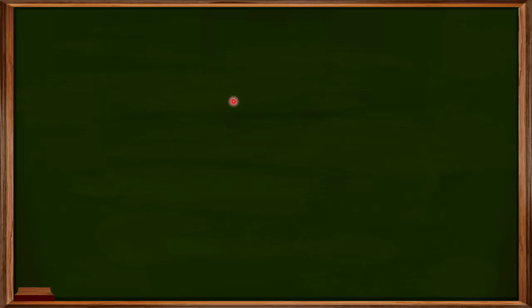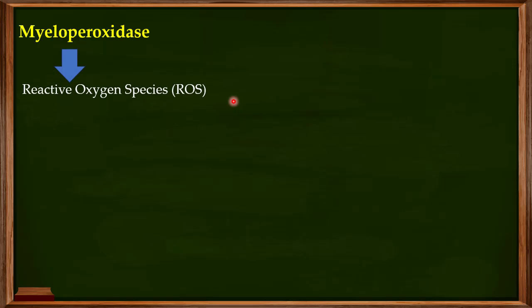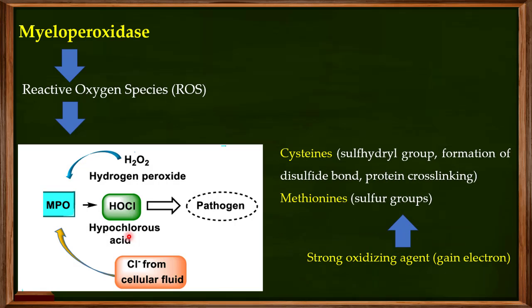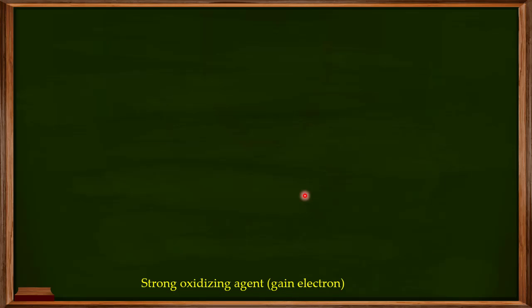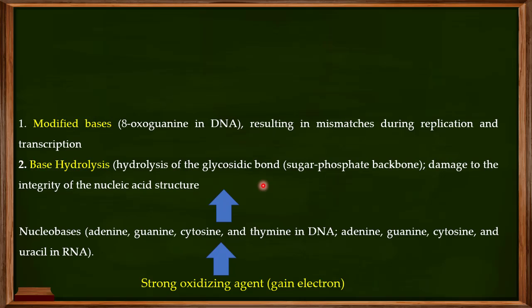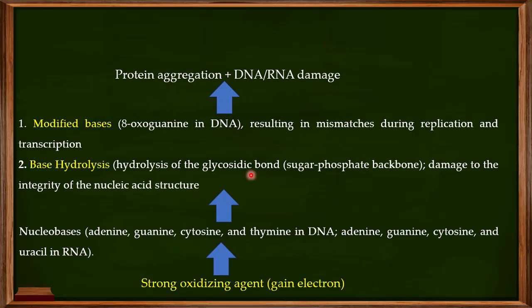In the last video I gave you details on the functions of myeloperoxidase — it is responsible for the production of reactive oxygen species like hypochlorous acid. Hypochlorous acid is a strong oxidizing agent that oxidizes proteins by interacting with cysteines and methionines, resulting in protein aggregation. It also interacts with nucleobases leading to formation of modified bases and hydrolysis of the glycosidic bond, causing damage to DNA and RNA. The combined action of protein aggregation and DNA/RNA damage leads to cell death of the pathogen.